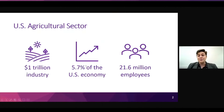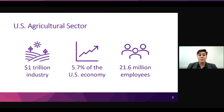Taking a step back, first we have to talk about what the agricultural sector is. As you can tell from the slide, it's a one trillion dollar industry that represents 5.7 percent of the U.S. economy and is supported by 21.6 million employees. The agricultural sector is also one of the top three sectors with the most prevalence of labor trafficking in the U.S., with the most federally prosecuted labor trafficking cases, and it's an emerging area of study among social scientists, which provides necessary context to support operations engineering modeling approaches.